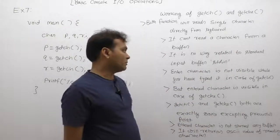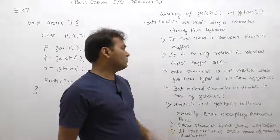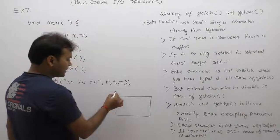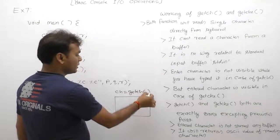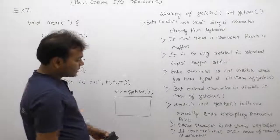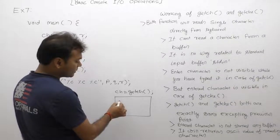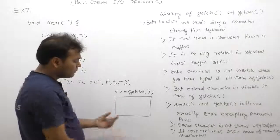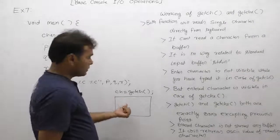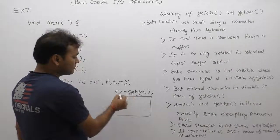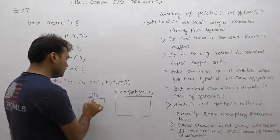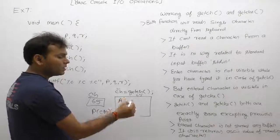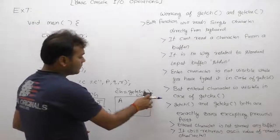These functions have no relation to any standard buffer like stdin or any user-defined buffers. The entered character is not visible on the monitor while you type it. Suppose you type a character during a getch function call — for example, char ch = getch() — and you press a particular key like 'J'. In that case, getch reads the key immediately, but the entered character is not visible on the monitor.